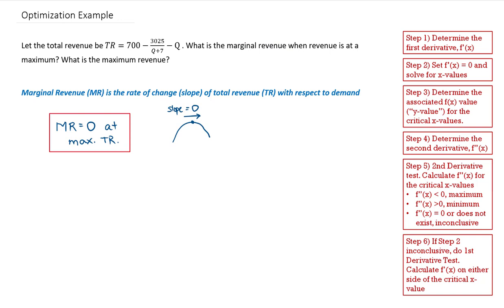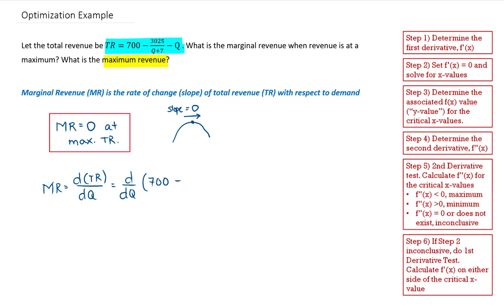So that resolves the first part of the question. Now, what is the maximum revenue? First we're going to get that derivative — that marginal revenue — the derivative of TR with respect to Q. That derivative is going to be the derivative of this function, d over dQ of 700 minus 3025 over Q plus 7, minus Q.